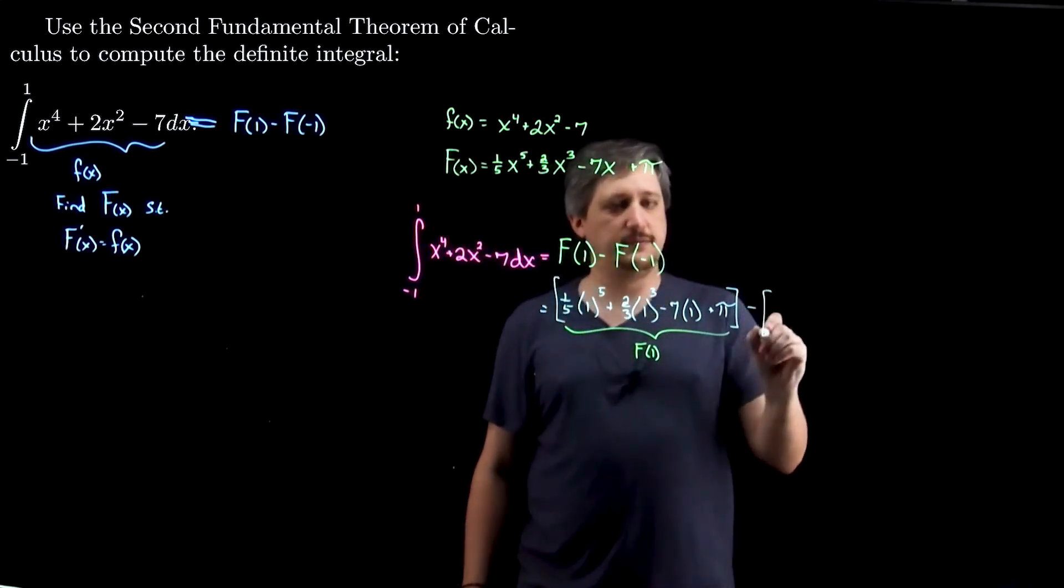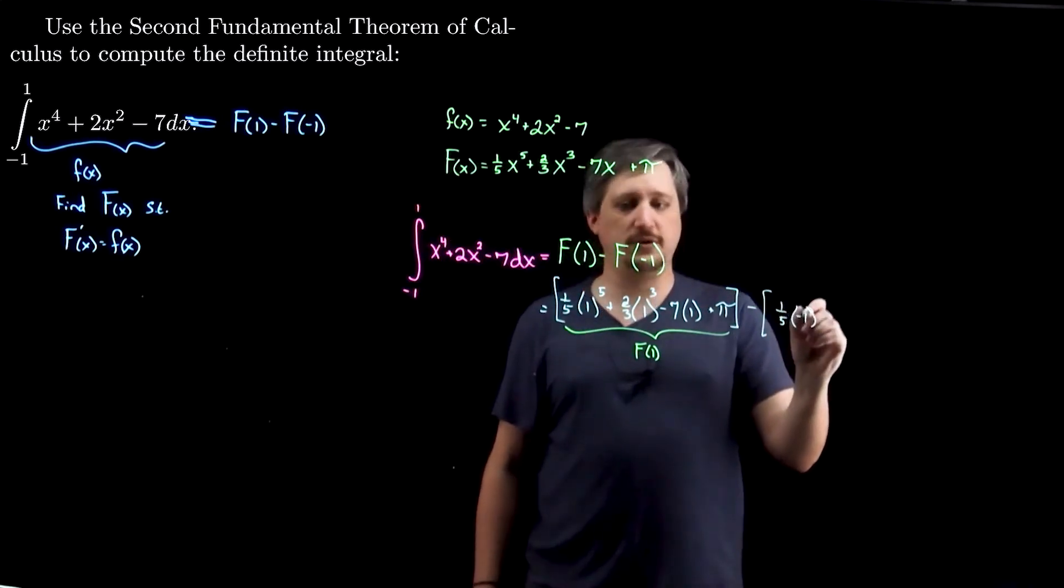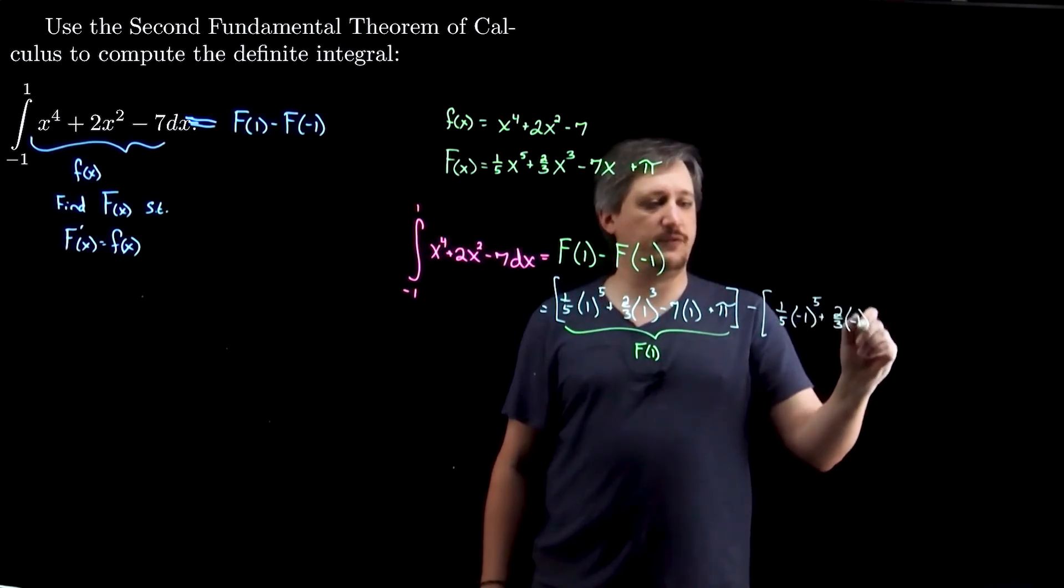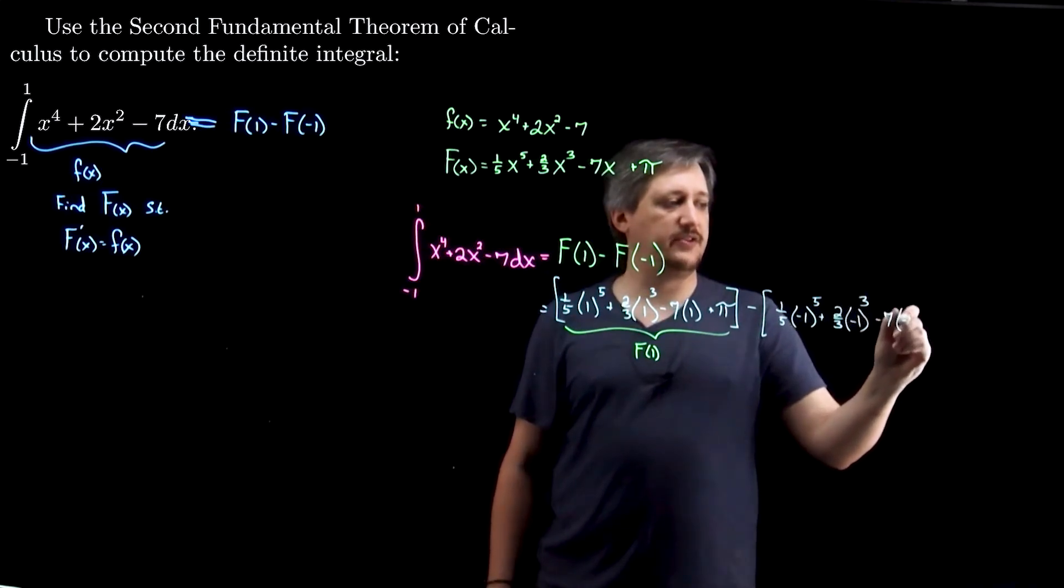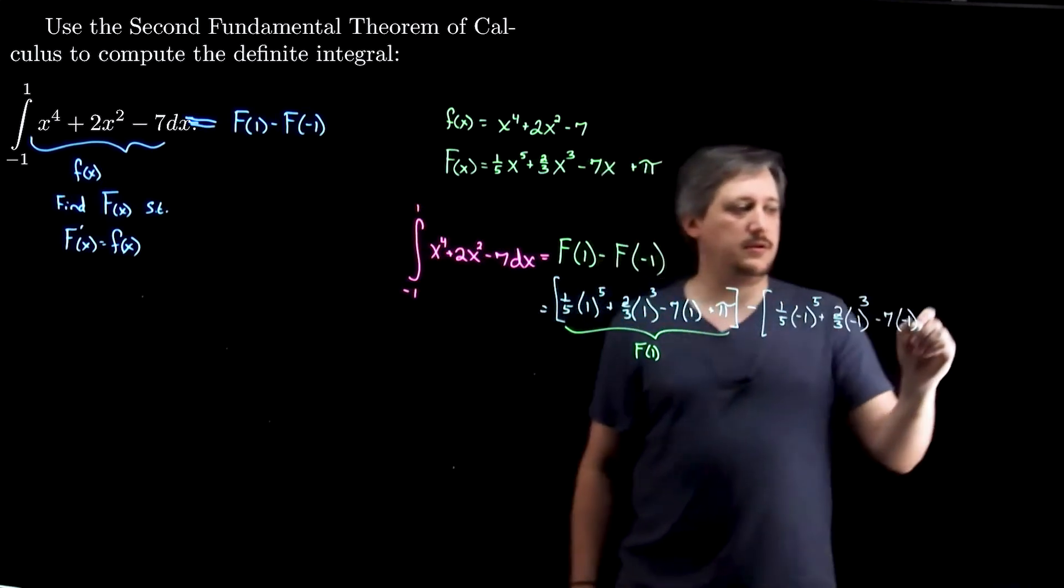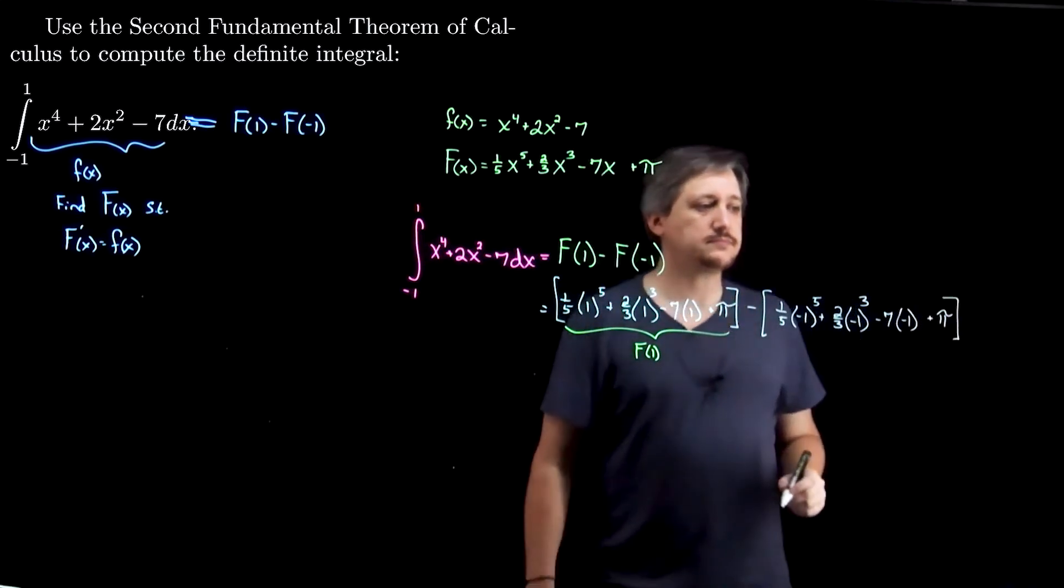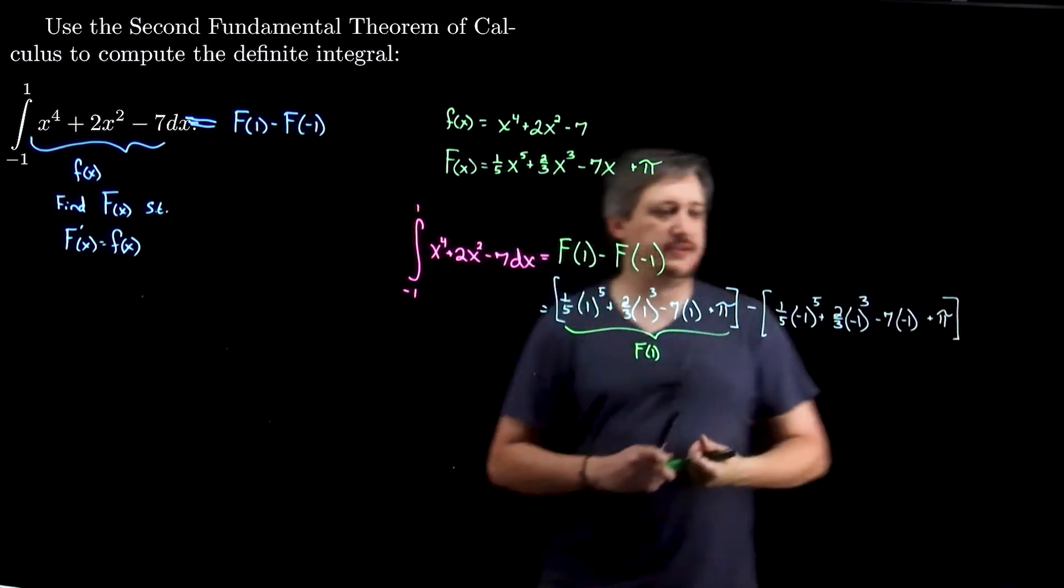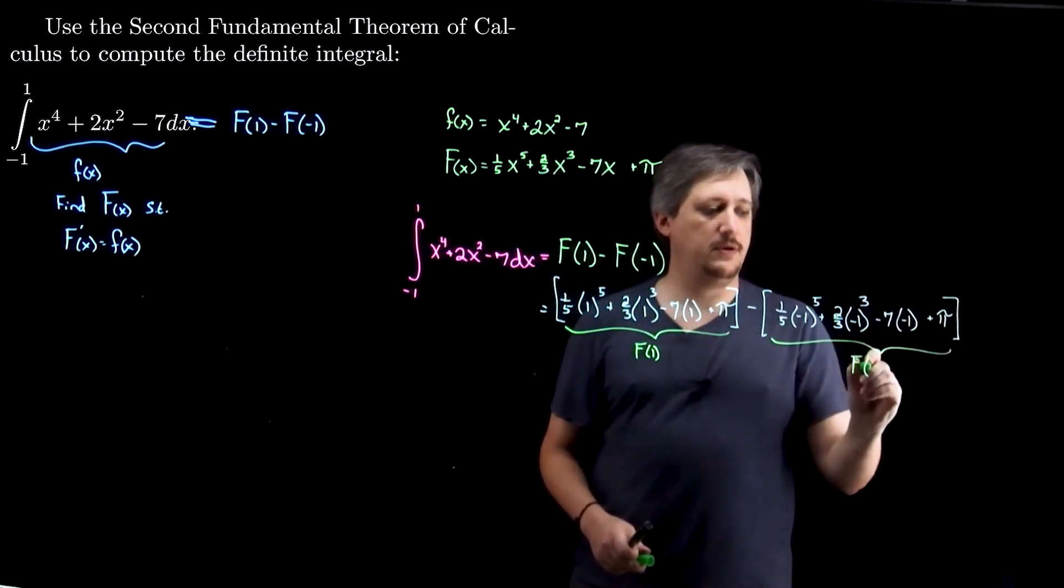And then, subtract F of negative 1. So, 1 fifth negative 1 to the fifth plus 2 thirds negative 1 cubed minus 7 times negative 1 plus pi, where this part is F of negative 1.